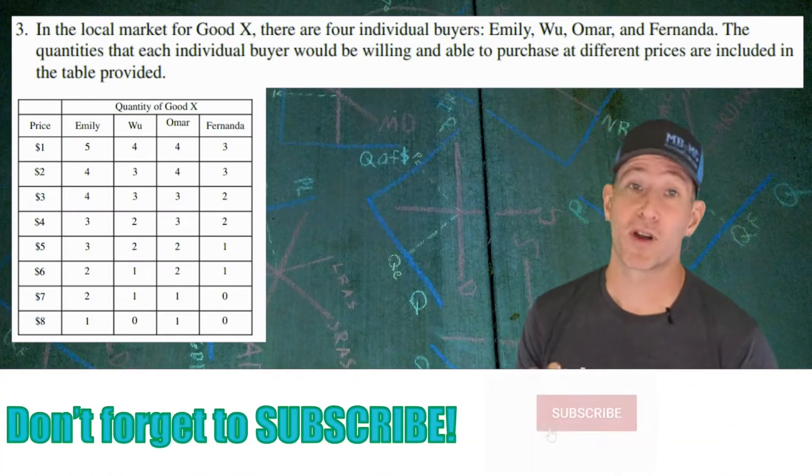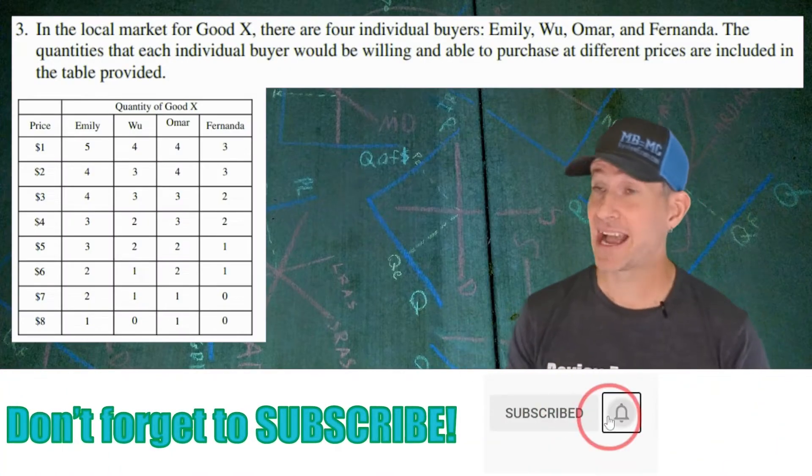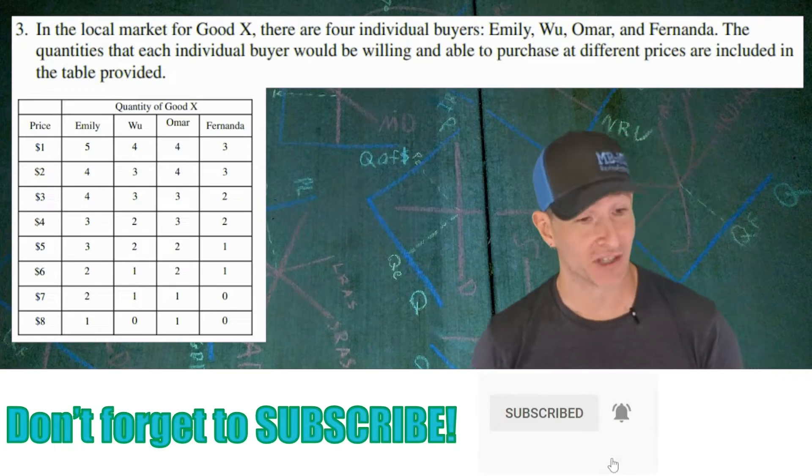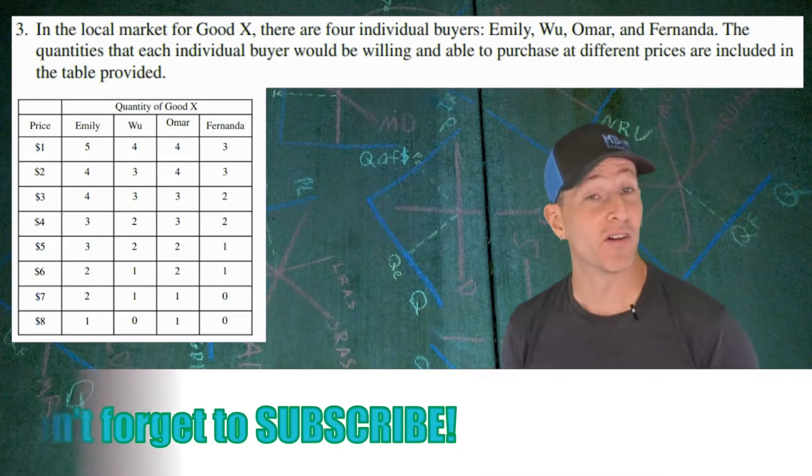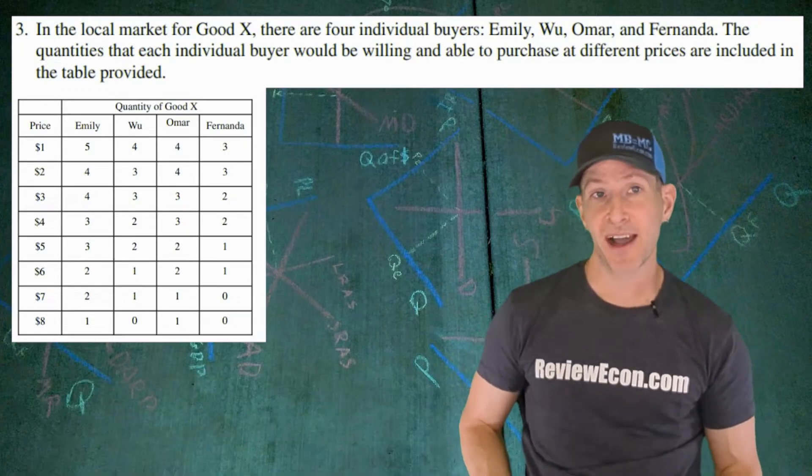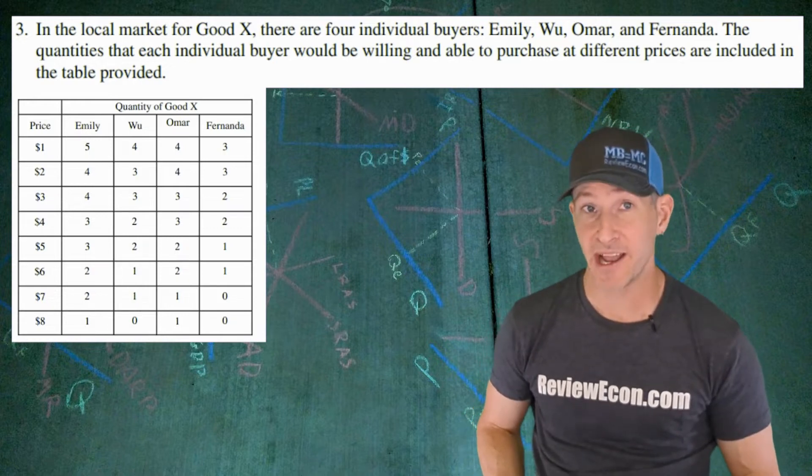Now, for this question, we are focusing on the market for good X, and we have four individual buyers of good X. In this table, we have all the quantities that these consumers are willing to buy, along with the prices they'd be willing to pay for the different quantities.